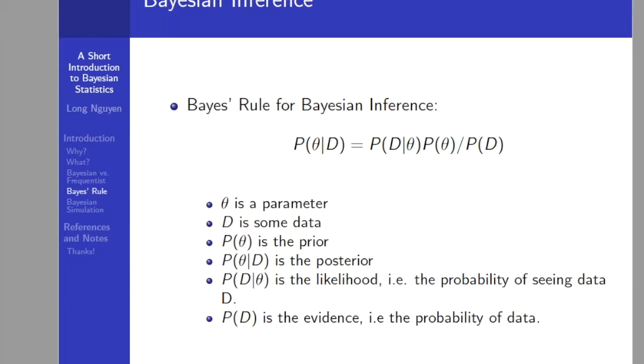It's also very important to know about Bayes rule for Bayesian inference. Bayesian inference can be written as P of Theta given D equals P of D given Theta times P of Theta over P of D.